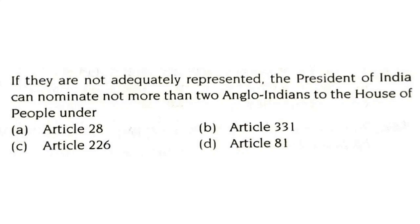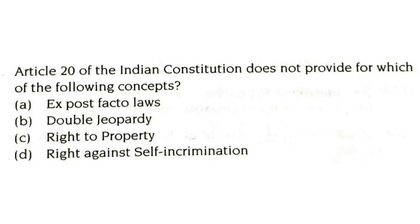If they are not adequately represented, the president of India can nominate not more than two Anglo-Indians to the House of People, that is Lok Sabha, under Article 331. Article 20 of the Indian constitution does not provide for right to property — it provides for ex post facto laws, double jeopardy, and right against self-incrimination. Option C is the correct answer.